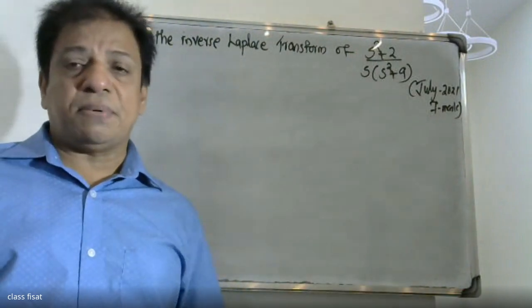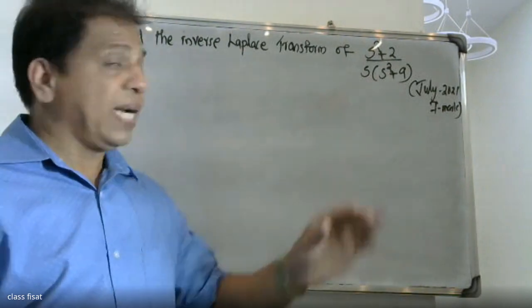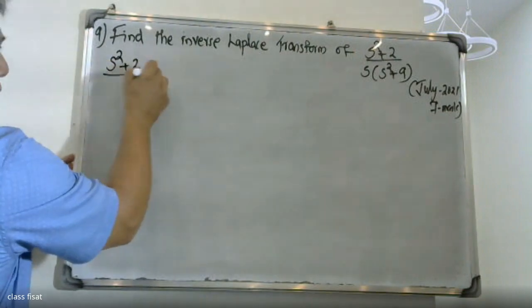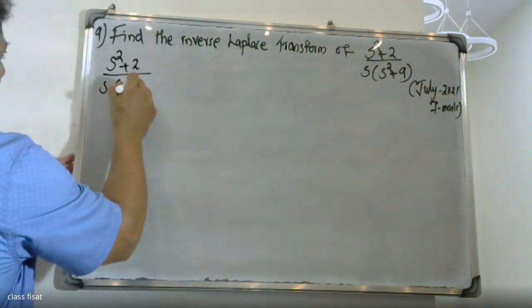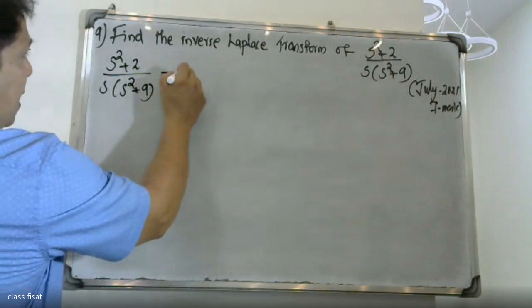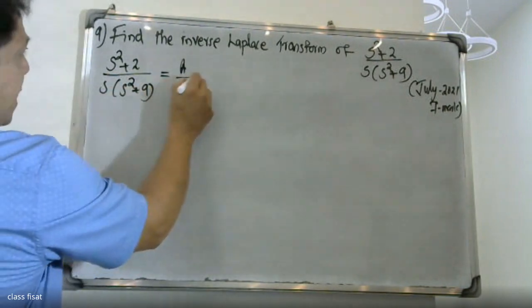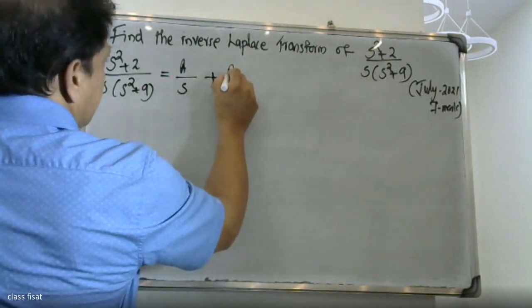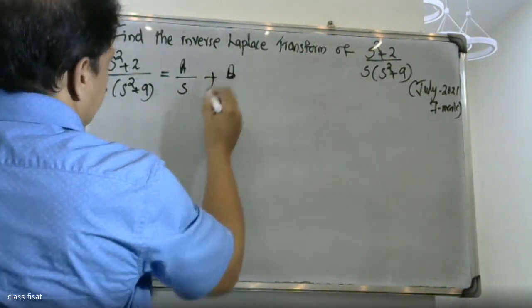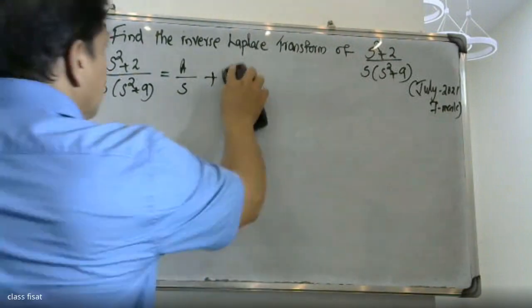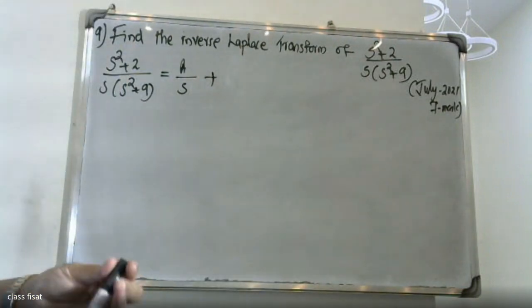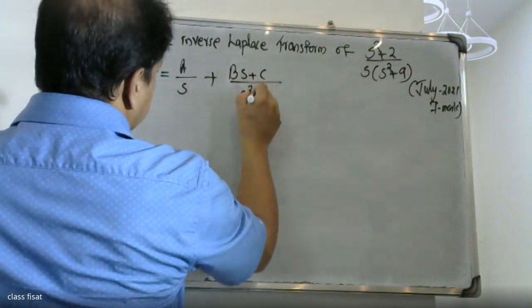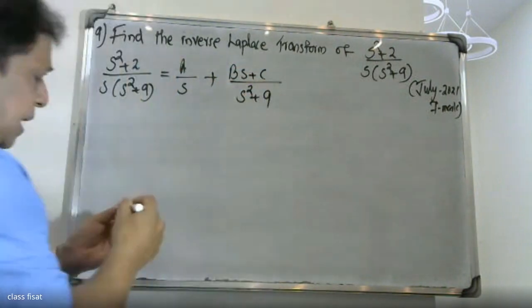We have (S² + 2) divided by S into (S² + 9). We write the partial fraction as A/S plus (BS + C) divided by (S² + 9), with denominator S² + 9.